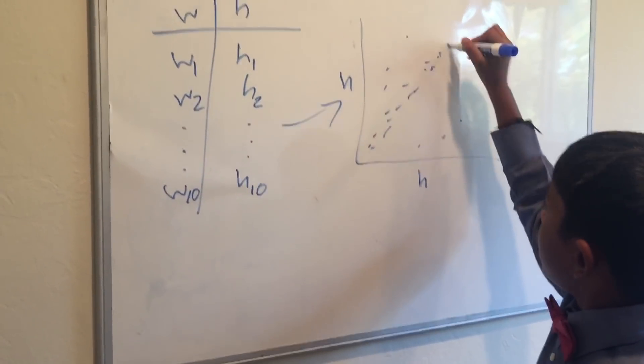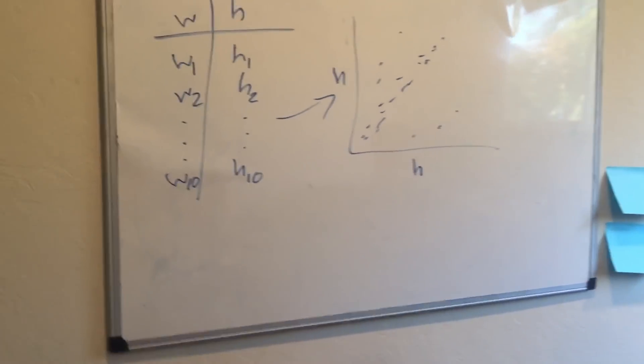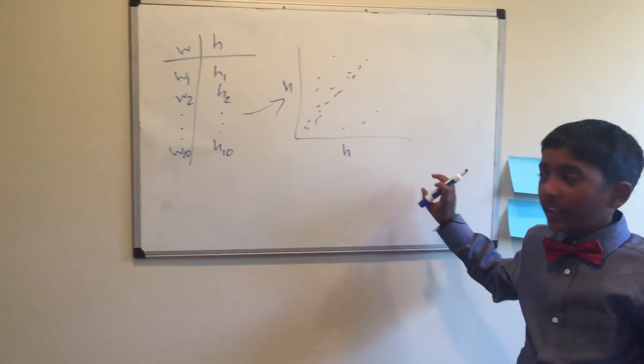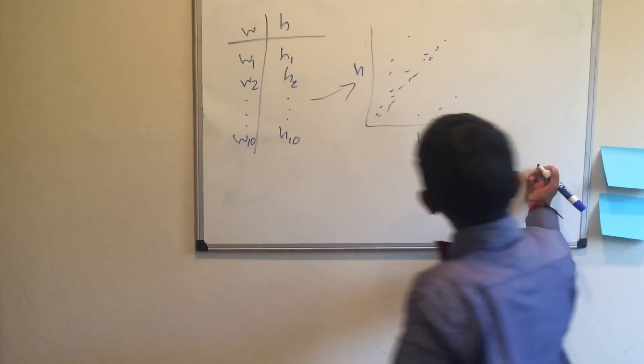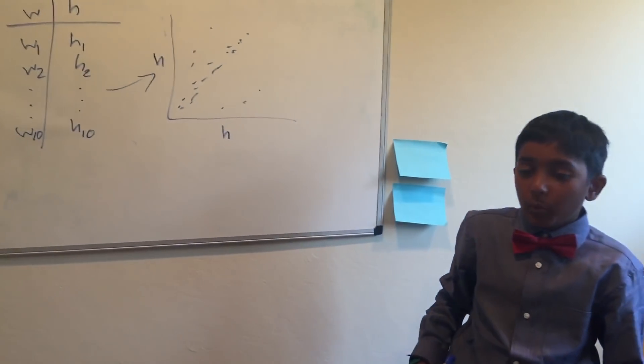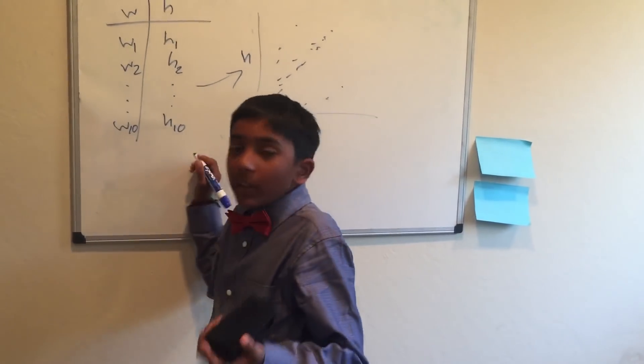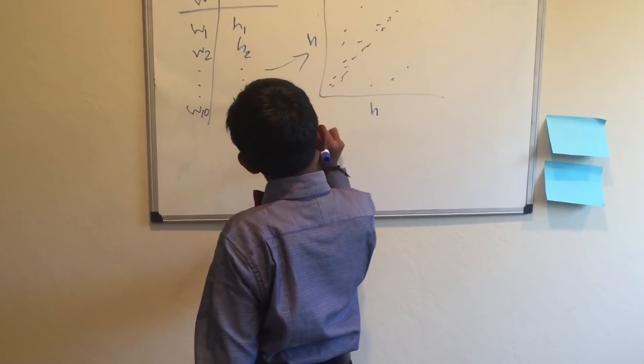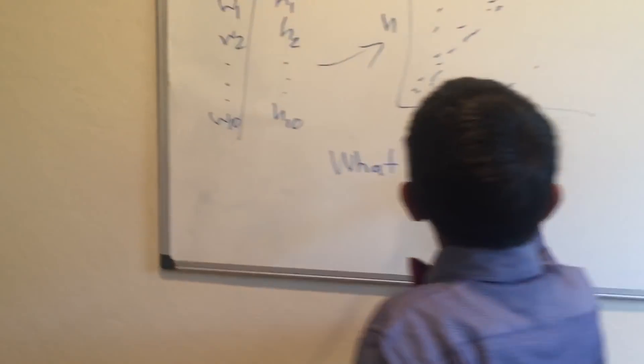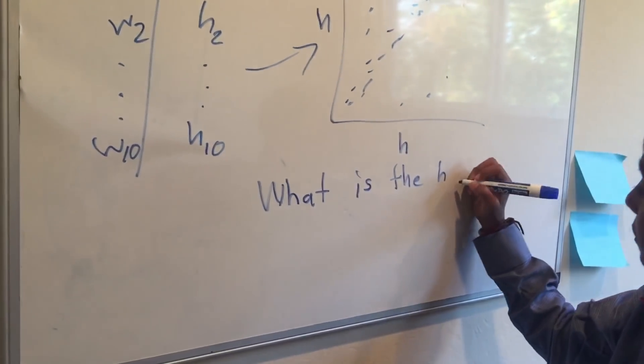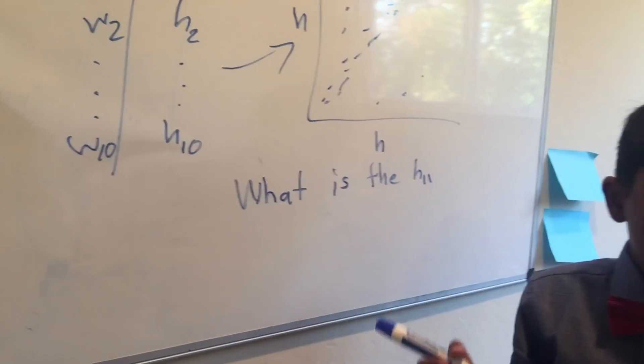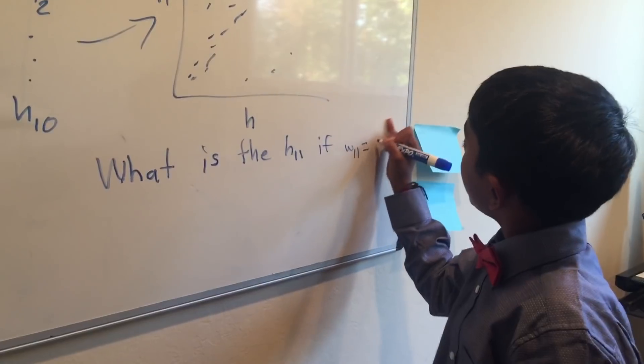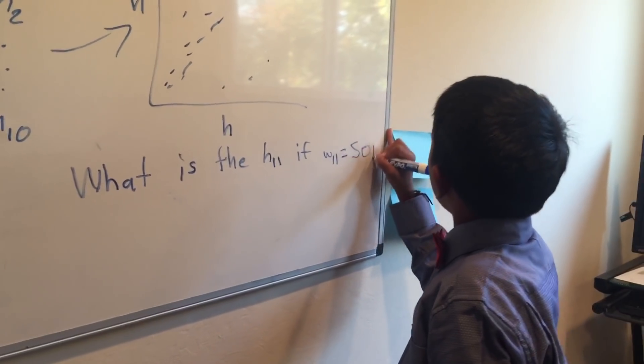You have this weight and height, and then you're given this person. So someone asks, what is the height of person 11 if the weight of guy 11 equals 50 kg?